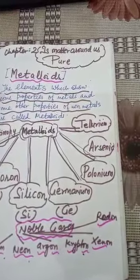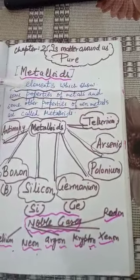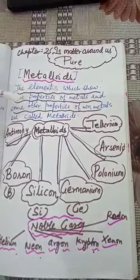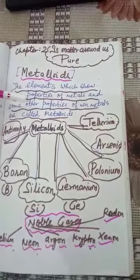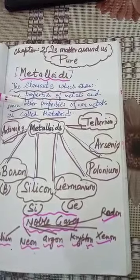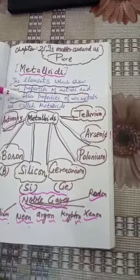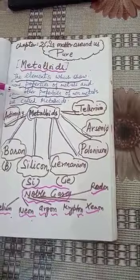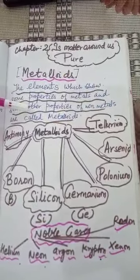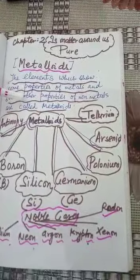So we can define metalloid as the elements which show some properties of metals and some other properties of non-metals. They are also known as semi-metals because they are intermediate between the properties of metals and non-metals.